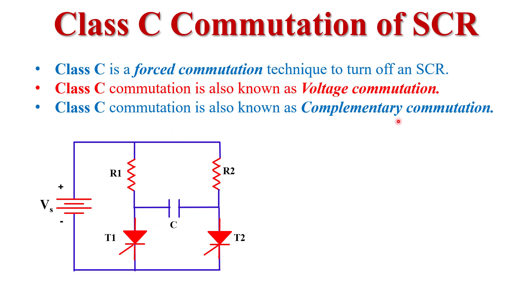Class C commutation is also known as complementary commutation. In the circuit diagram of Class C commutation we use two thyristors, T1 and T2. First we turn on T1 thyristor by applying a gate current. If we want to turn off T1 thyristor, a gate pulse is given to T2 thyristor and T2 gets turned on. If we want to turn off T2 thyristor, we apply a gate triggering pulse to T1 and T1 gets turned on. So this complementary action is why it is called complementary commutation.